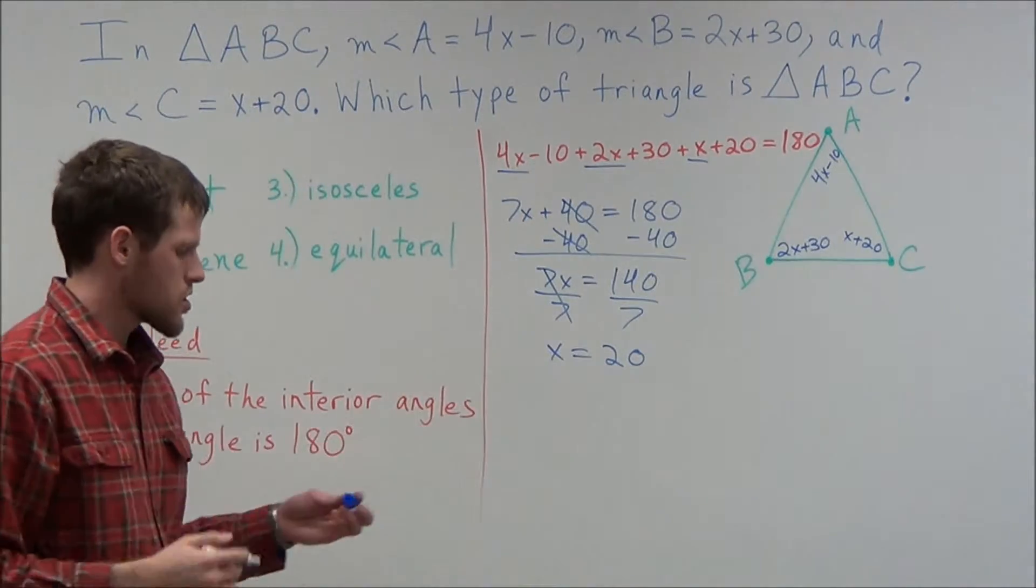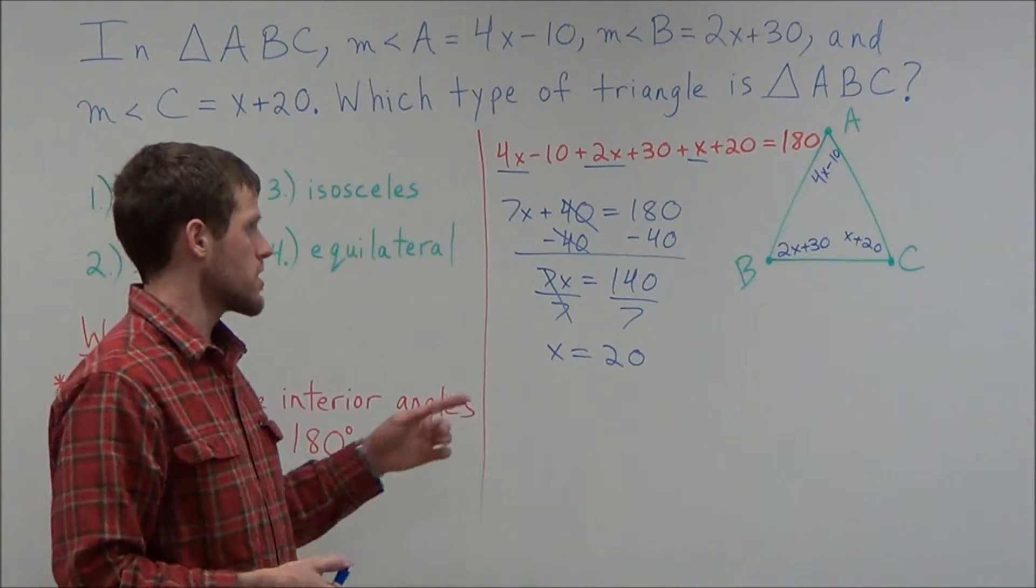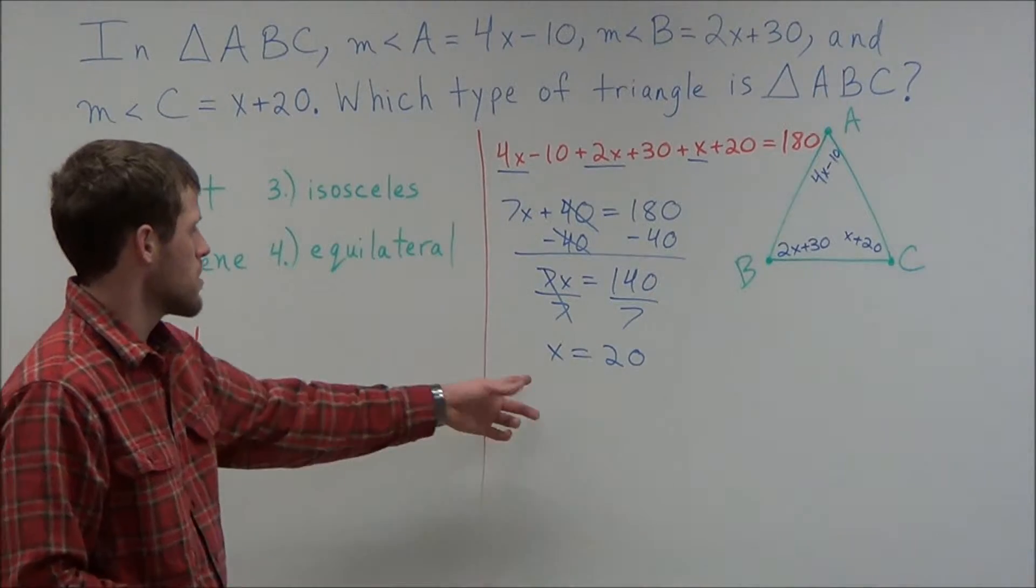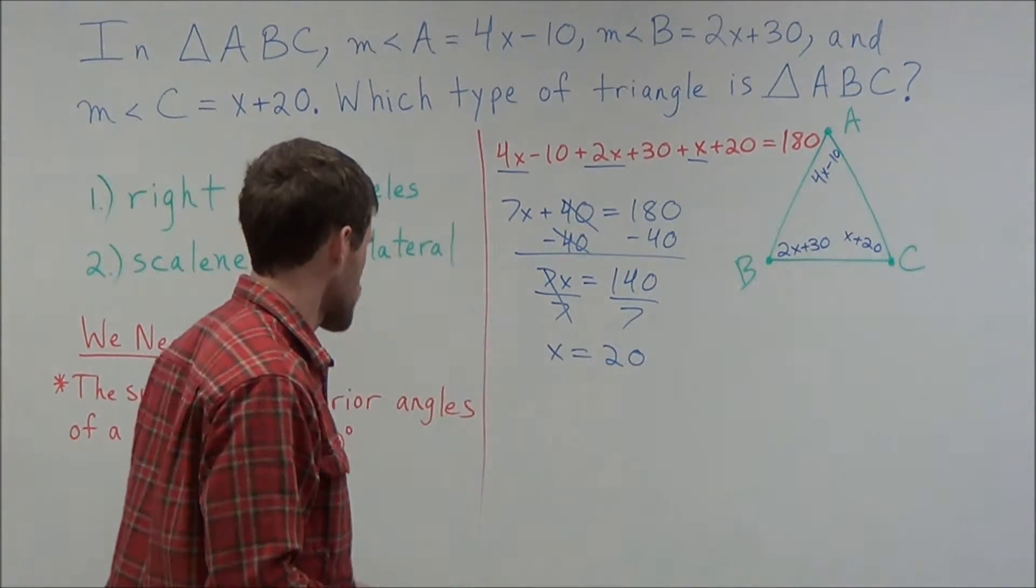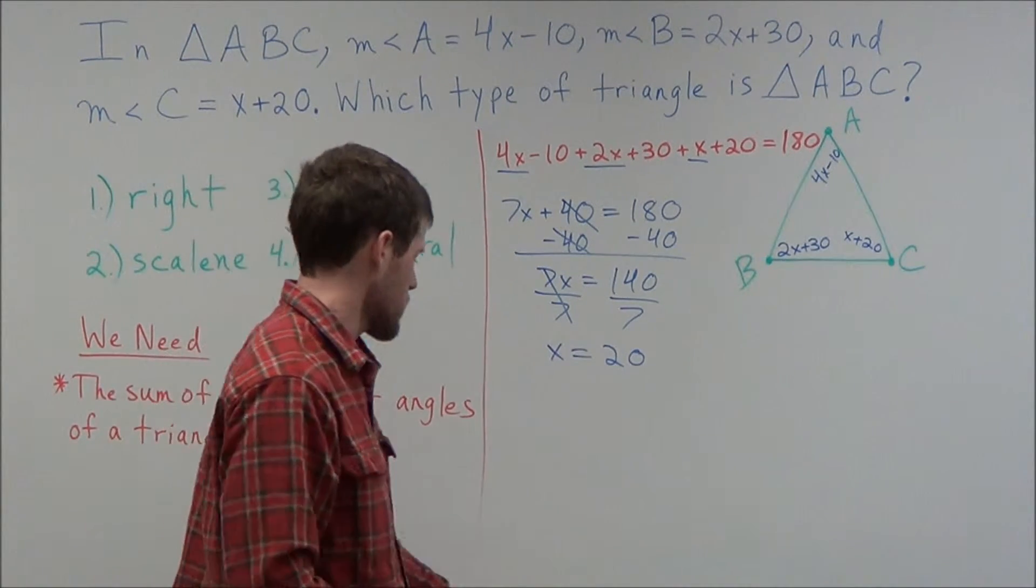So now at this stage, this is a lot of work that we've had to do, but we're not done yet. Now what we need to do is we need to plug in x equals 20 for all three angles to see what type of triangle that we have.